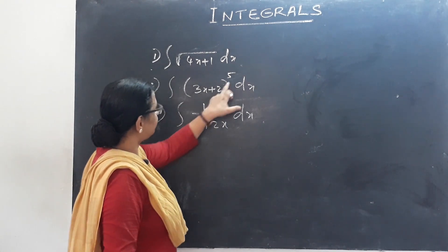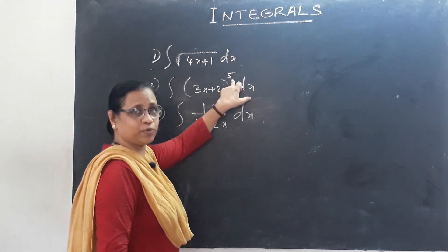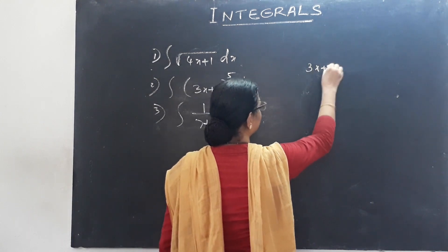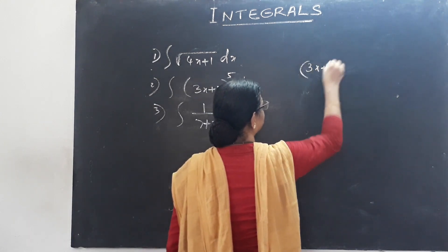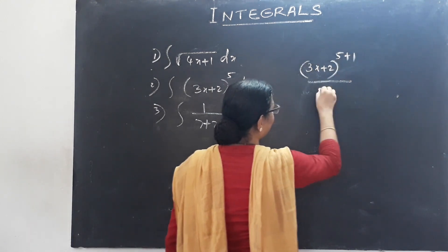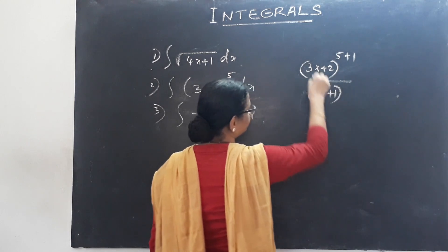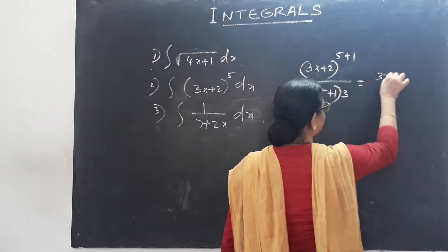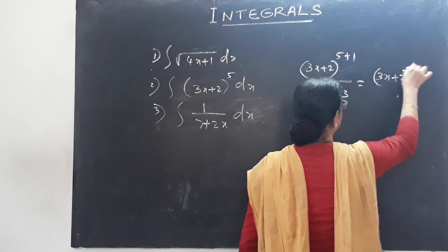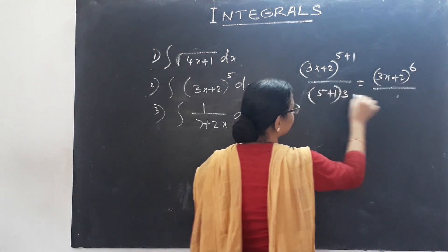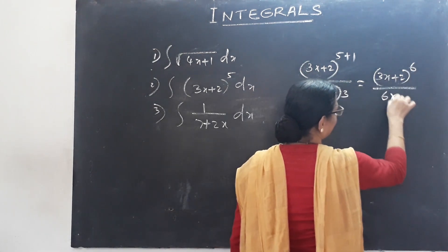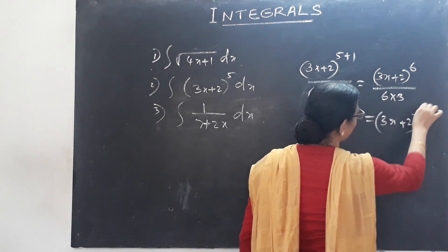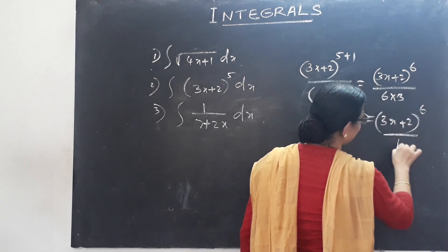The next question is (3x+5)^5. That means: (3x+2)^(5+1) divided by (5+1) into 3, which gives (3x+2)^6 divided by (6×3) = 18. So the answer is (3x+2)^6 / 18 plus c.